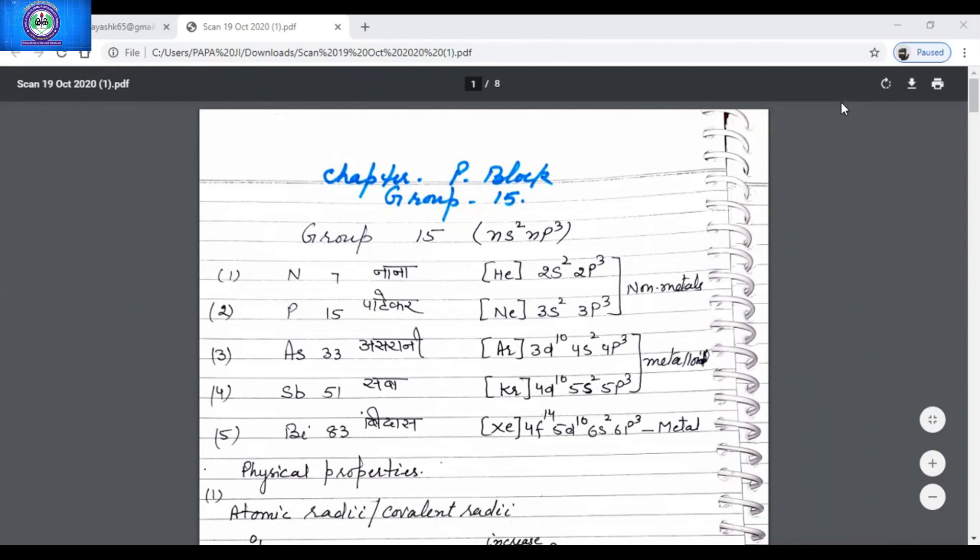Phosphorus atomic number is 15. Its electronic configuration is neon 3s2 3p3.